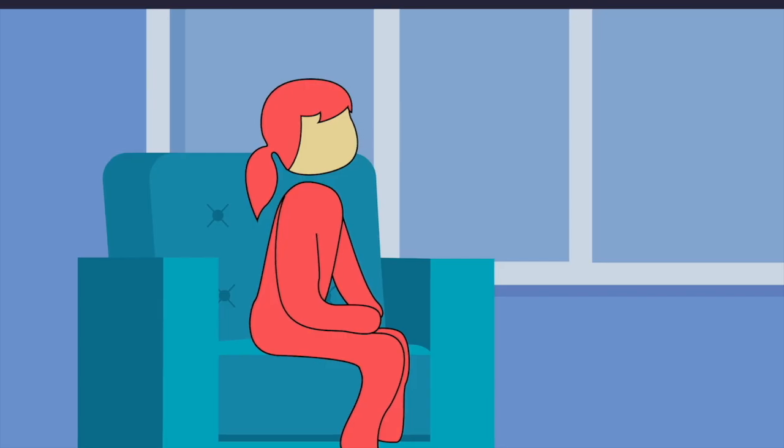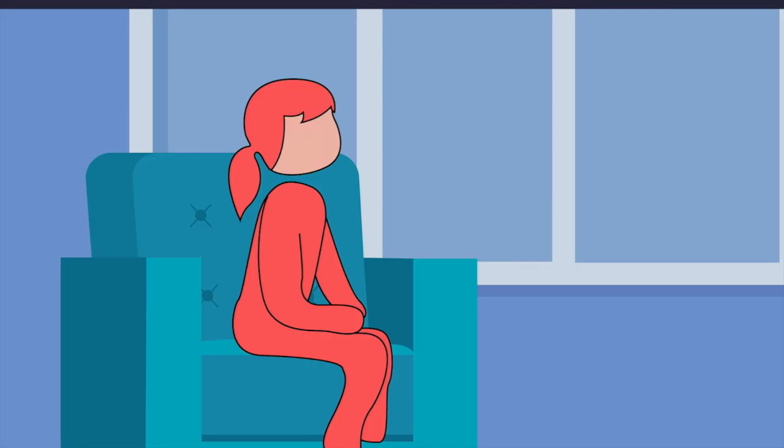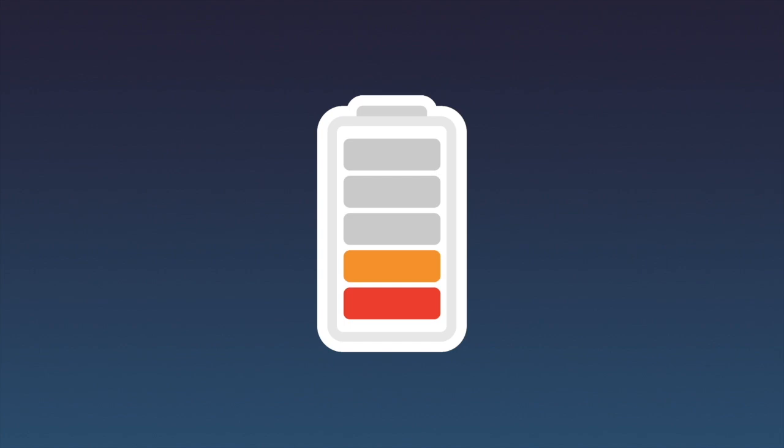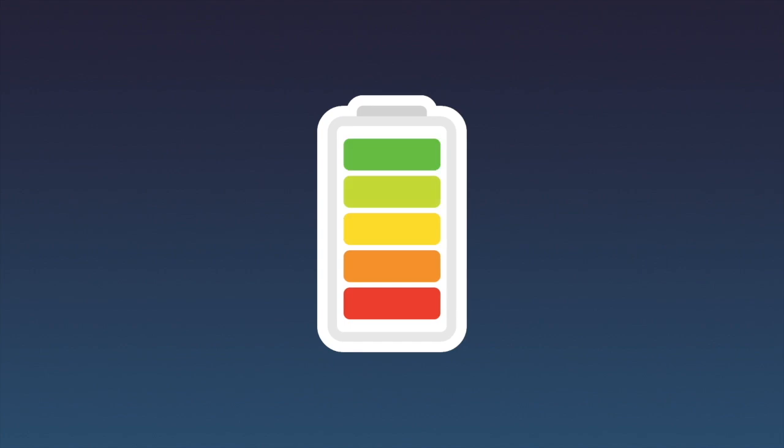Then after one or two weeks, the person starts recovering and things start getting back to normal. The yellow color slowly goes away, the symptoms resolve and energy levels increase. The body completely gets rid of the virus and it no longer spreads in the stool.